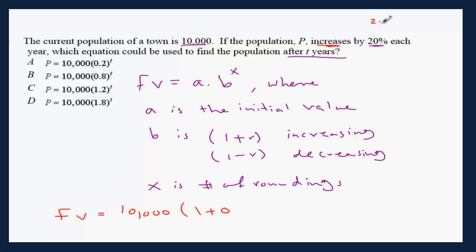So, 20% is the same as 20 over 100. That's going to be 0.2, to the power of the number of roundings each year.